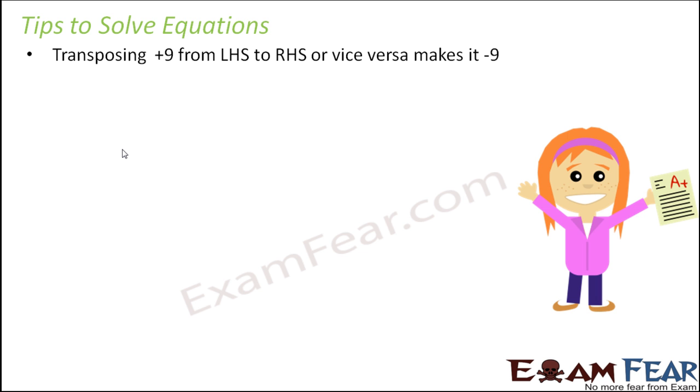Let us first talk about tip number 1. Whenever you transpose plus 9 from left hand side to right hand side or vice versa, it becomes minus 9. So what does that mean? Let's say you have 3x plus 9 equals 1.